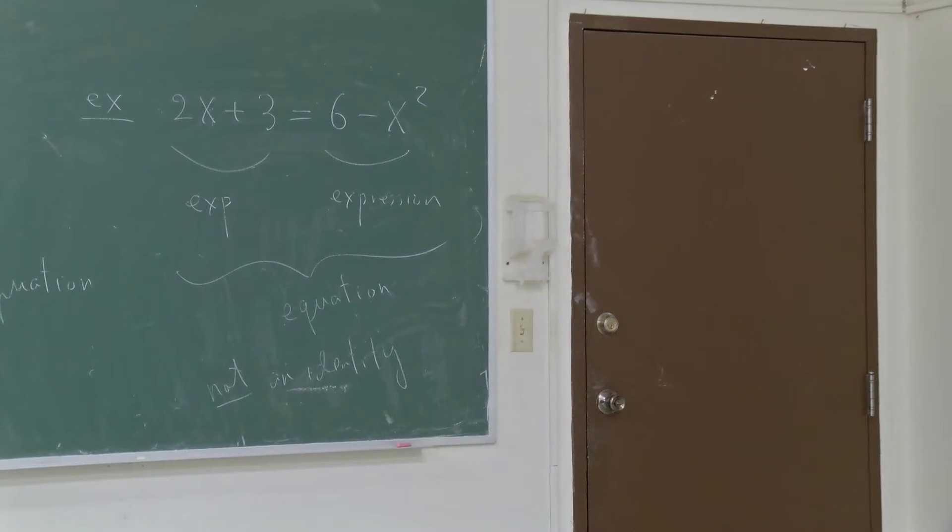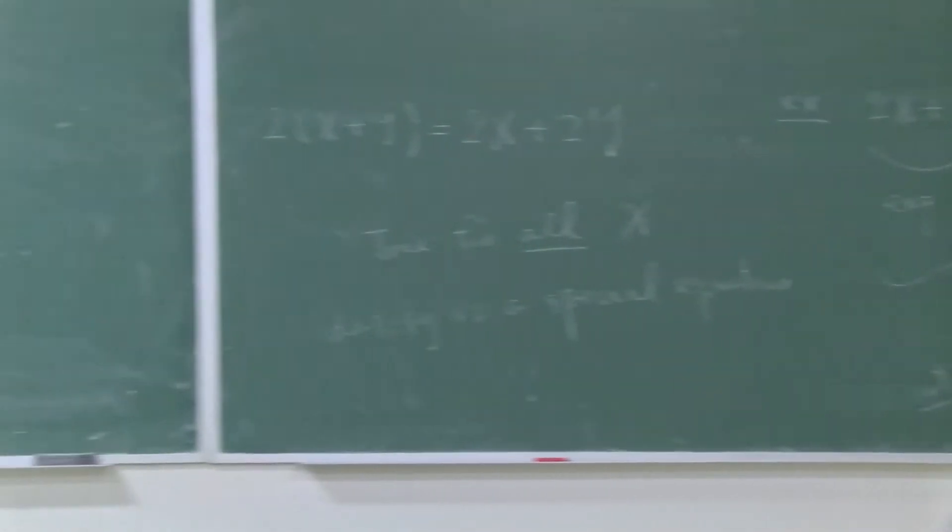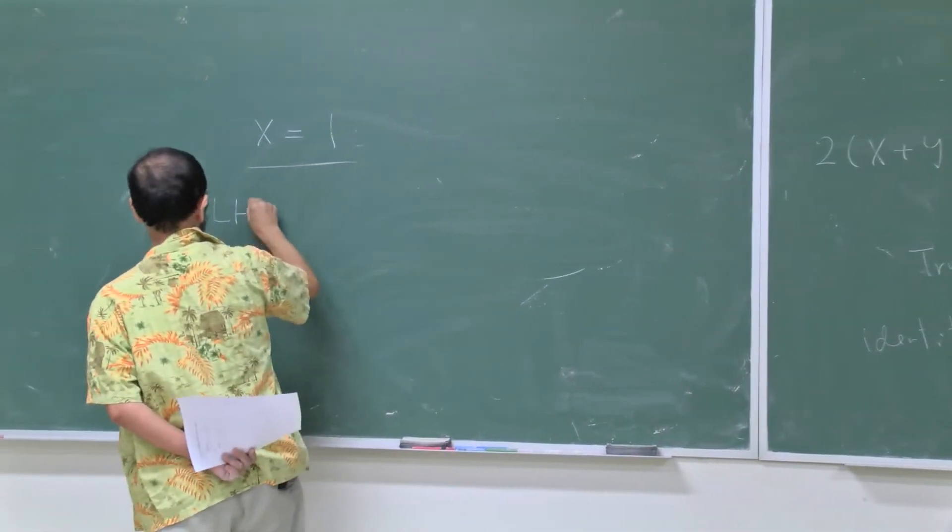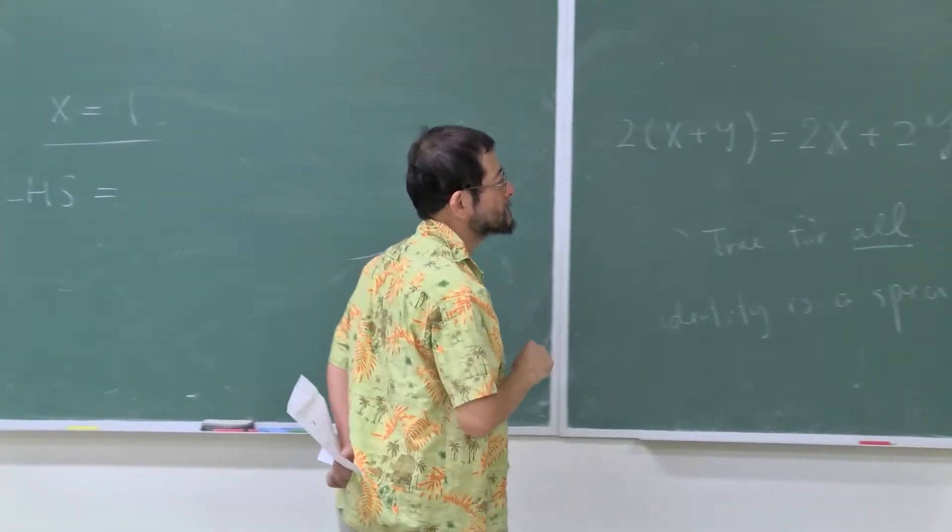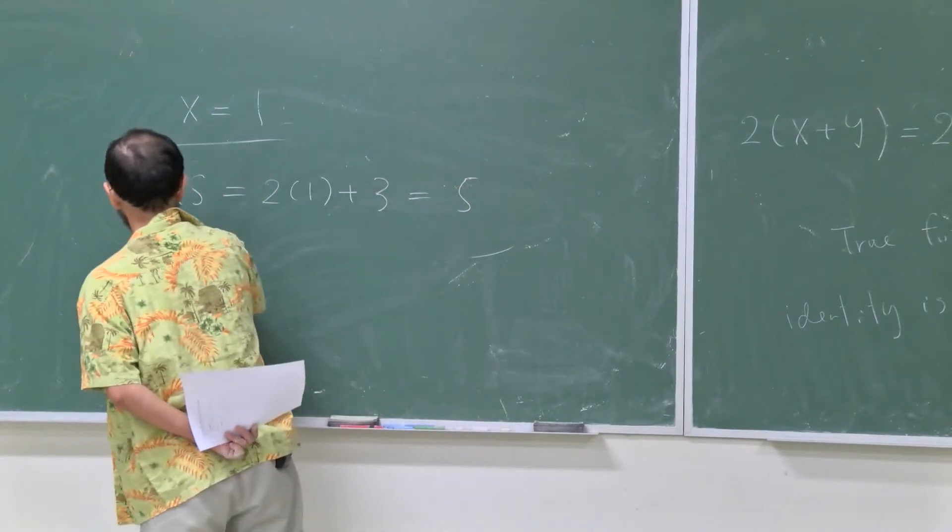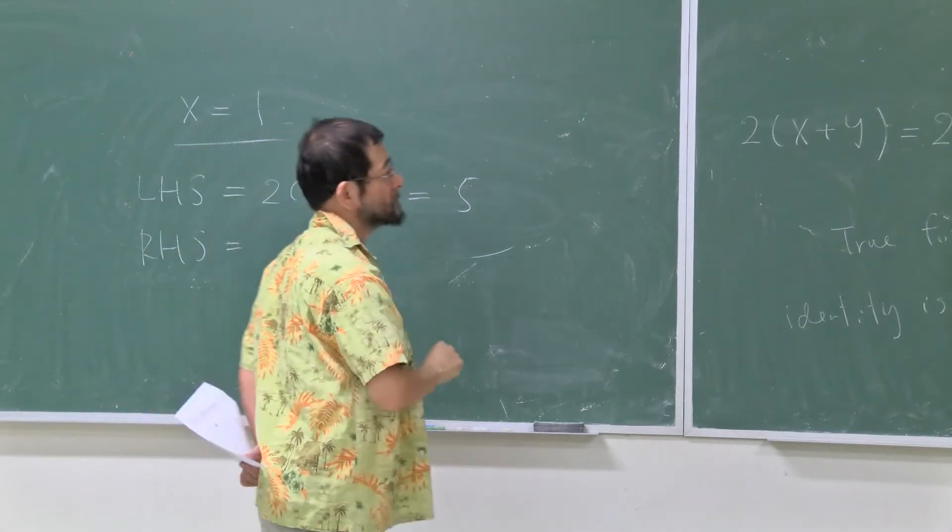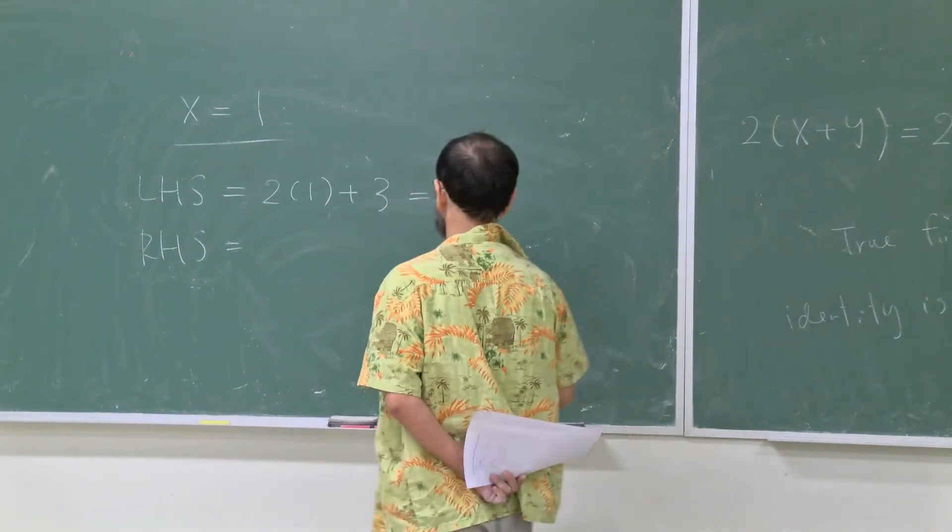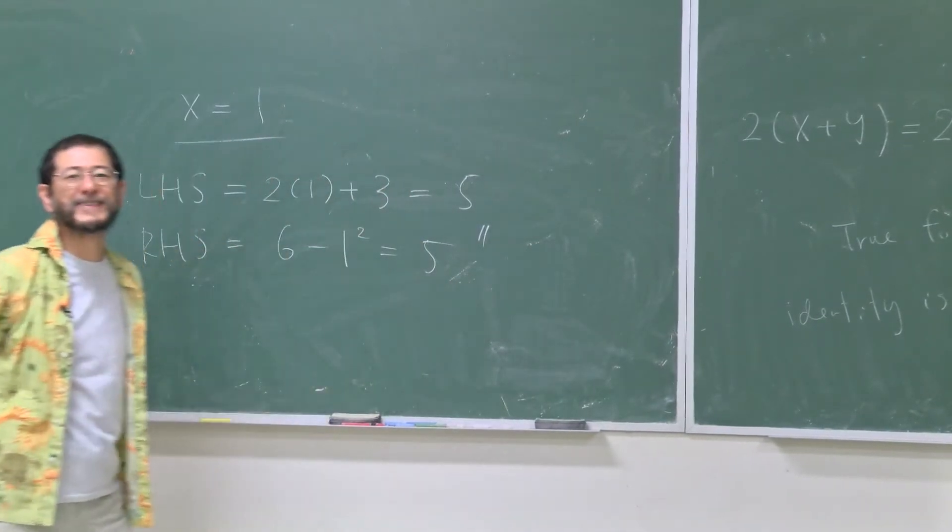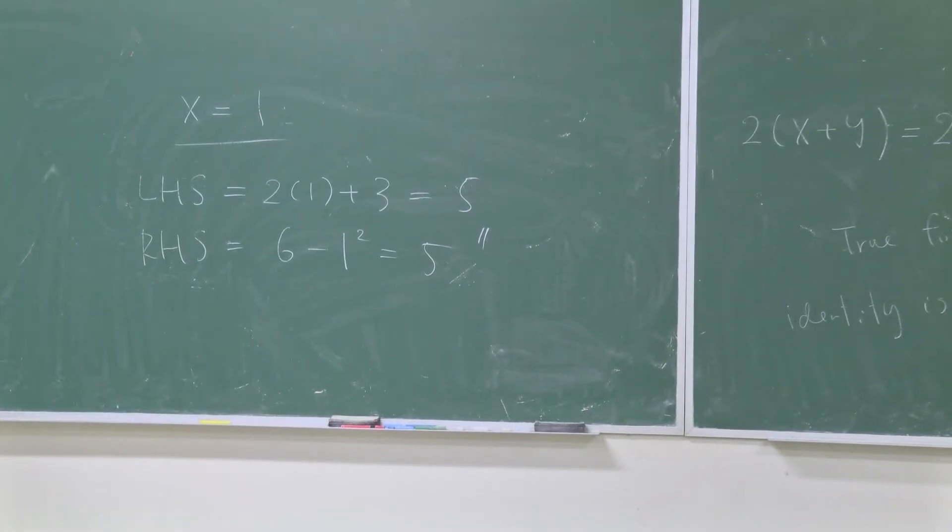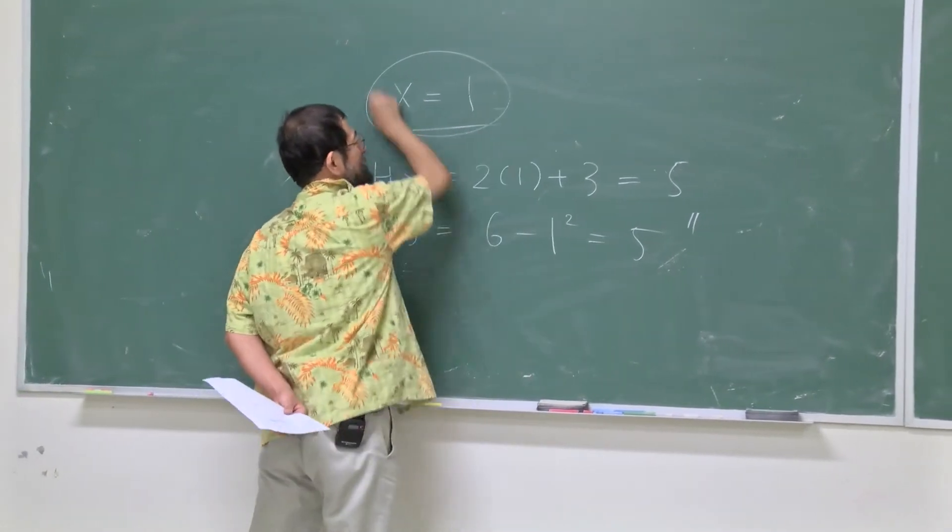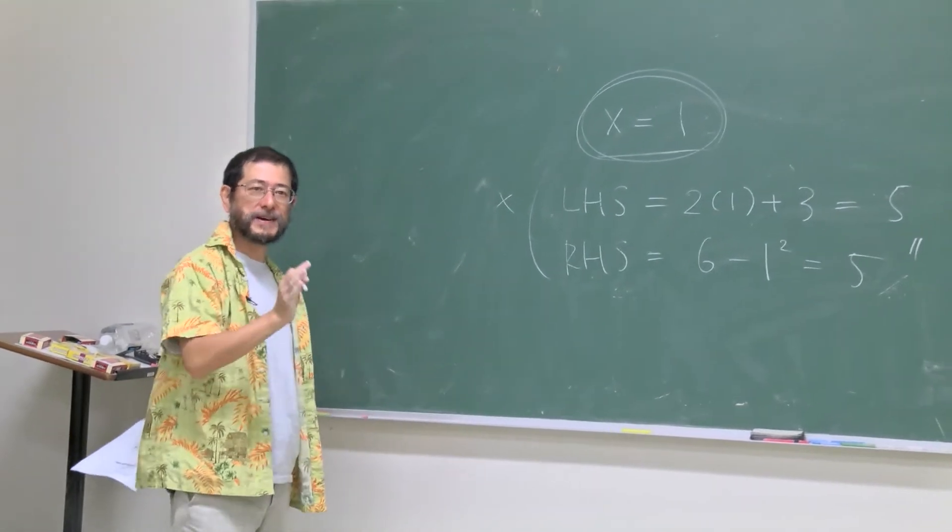Maybe the easiest one is, yeah, just give me the easy one. x equals to 1. So then, in this case, your left hand side is 2 times 1 plus 3, which is 5. Your right hand side, which is 6 minus 1 squared. Oh, wait a minute. So you gave me the one which is equal. So in this case, it doesn't work out. Actually, this is also very, very useful information. So I'm glad that you made a mistake here.